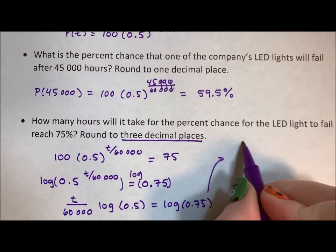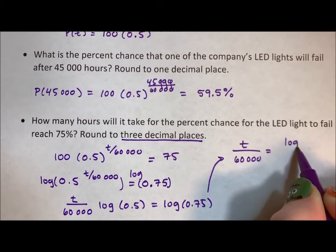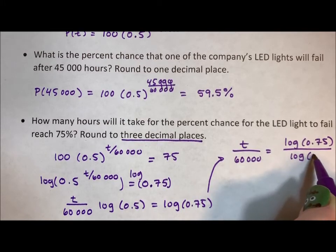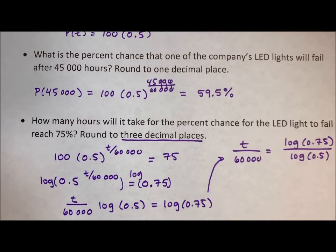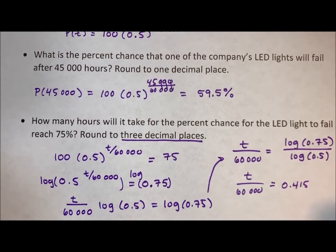So that t over 60,000 equals log of 0.75 divided by log of 0.5. When I divide both sides by the log of 0.5, so t over 60,000 equals 0.415. Then I multiply both sides by the 60,000.